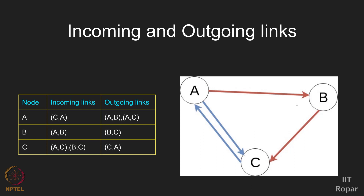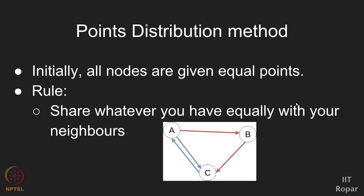Initially, all the nodes are given equal points. You can consider points as gift items or gold coins — some item equally given to all three people. They are asked to play a sort of game. The rule of this game is: whatever you have, you should share it equally with all your out-neighbors — all those people you like.